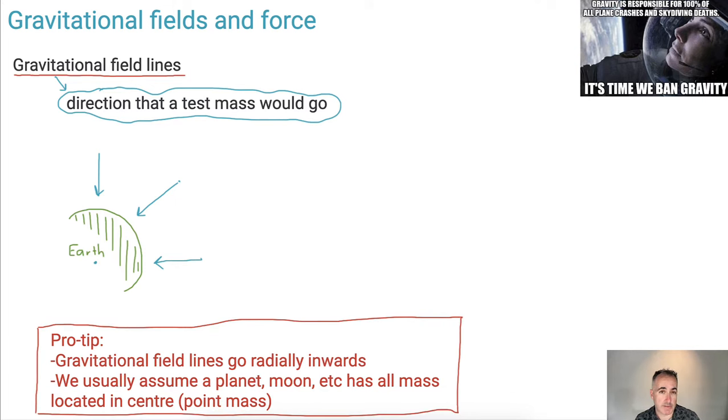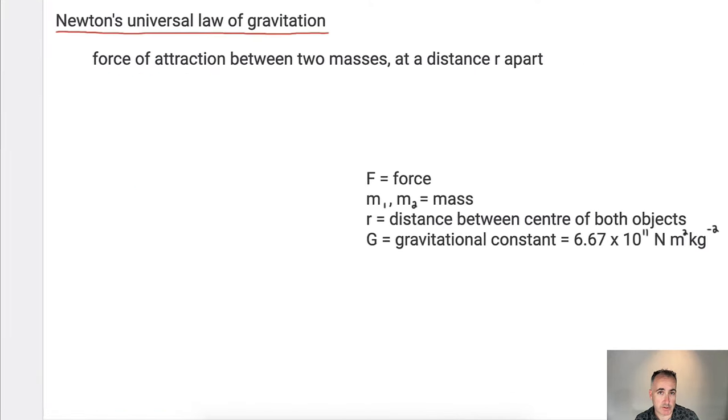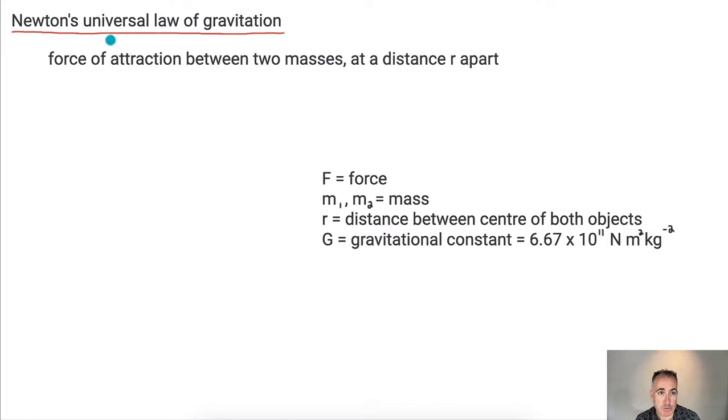Let's go on a little bit further and discuss gravitational force now. So we call this Newton's universal law of gravitation. And there's a reason for it, because we assume that this applies to anything in the universe. It's a force of attraction. So anything that has mass, this thing has mass, this other thing has mass, if you have mass, then they attract, always.